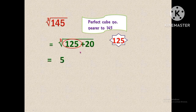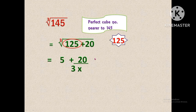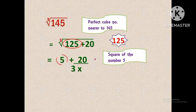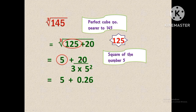We write 5 plus, then 20 as it is, divided by — in the denominator we add 3 into. This is the step to always remember. Next we find the square of the number 5, so we write 5 squared. That's all — only the calculation is remaining. We get 5 plus 0.26, because 20 divided by 3 into 25, that is 20 divided by 75, equals 0.26.